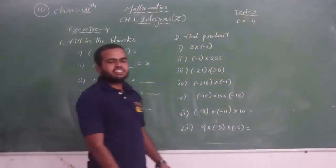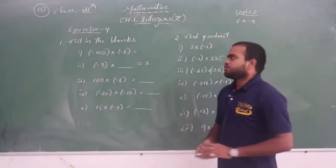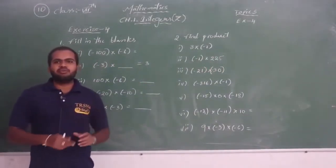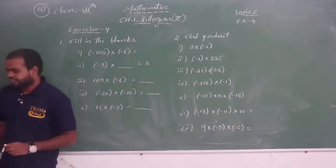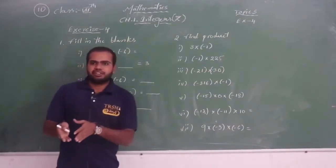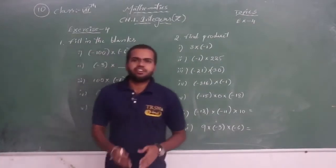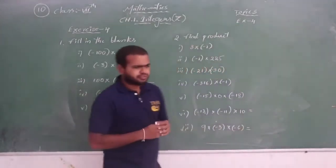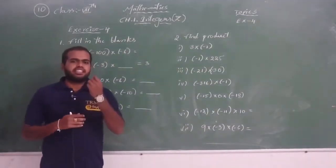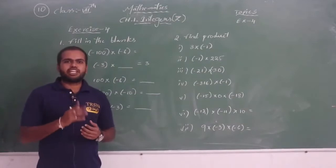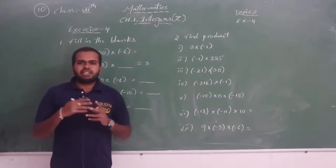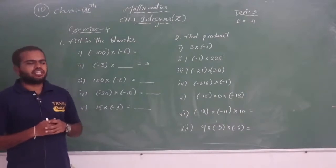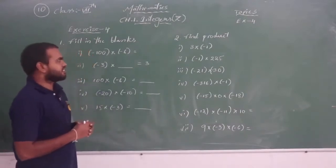Hello everyone. In the last class we discussed the topic of multiplication of integers. We covered a few key points: the product of two positive integers is a positive integer; the product of a positive and one negative integer is a negative integer; and the product of two negative integers is a positive integer. Also, multiplying an even number of negative integers gives a positive product, while multiplying an odd number of negative integers gives a negative product.